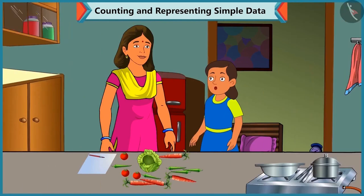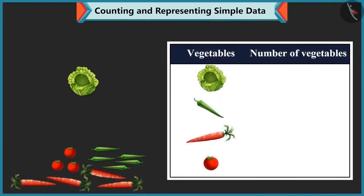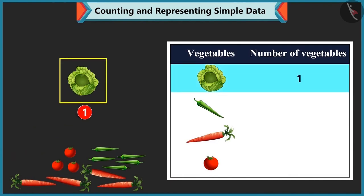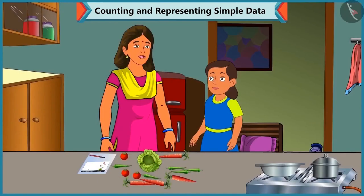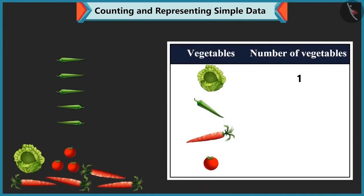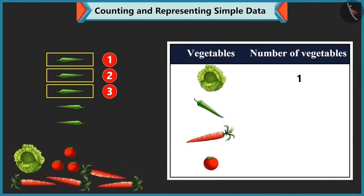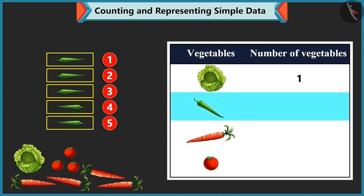Bubbly asks if she can help group the vegetables. Mummy says yes and demonstrates: there is 1 cabbage, so they write 1 in front of cabbage. Bubbly counts 1, 2, 3, 4, 5 green chillies and writes 5 against green chilli.